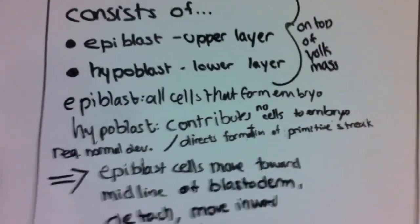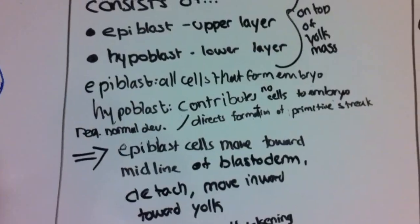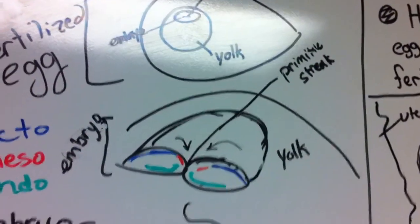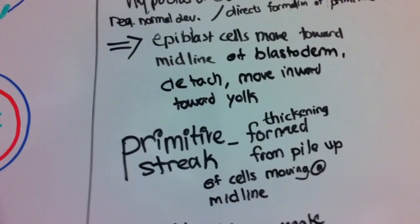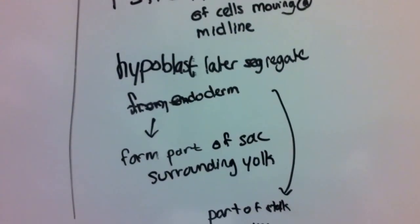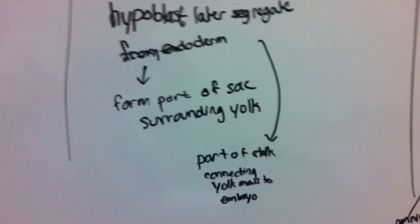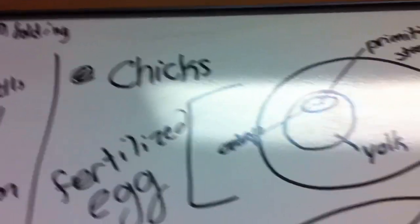As the epiblast cells move towards the midline of the blastoderm, they'll start to detach and move inward towards the yolk. The primitive streak itself is this thickening formed from the piling up of cells moving towards the midline. The hypoblast will later segregate from the endoderm and form part of the sac surrounding the yolk and part of the stalk connecting the yolk mass to the embryo.